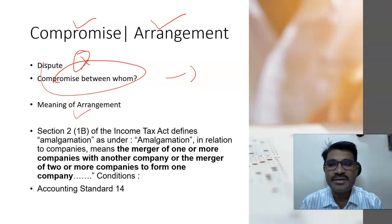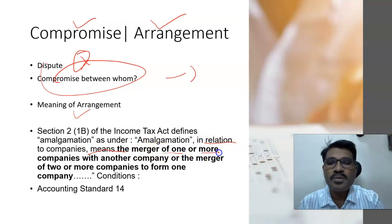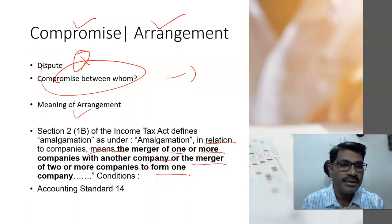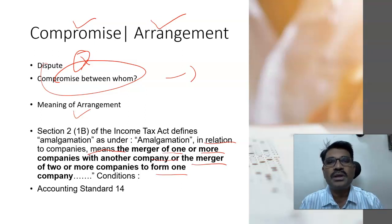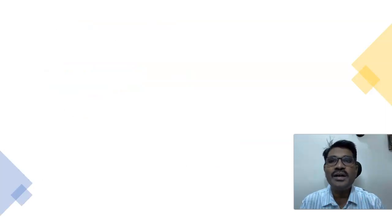The definition of amalgamation is found under Section 2, Clause 1(b) of the Income Tax Act, which defines amalgamation in relation to companies as the merger of one or more companies with another company, or the merger of two or more companies to form another company. So it is language that talks about a merger of one or two or more companies forming one.